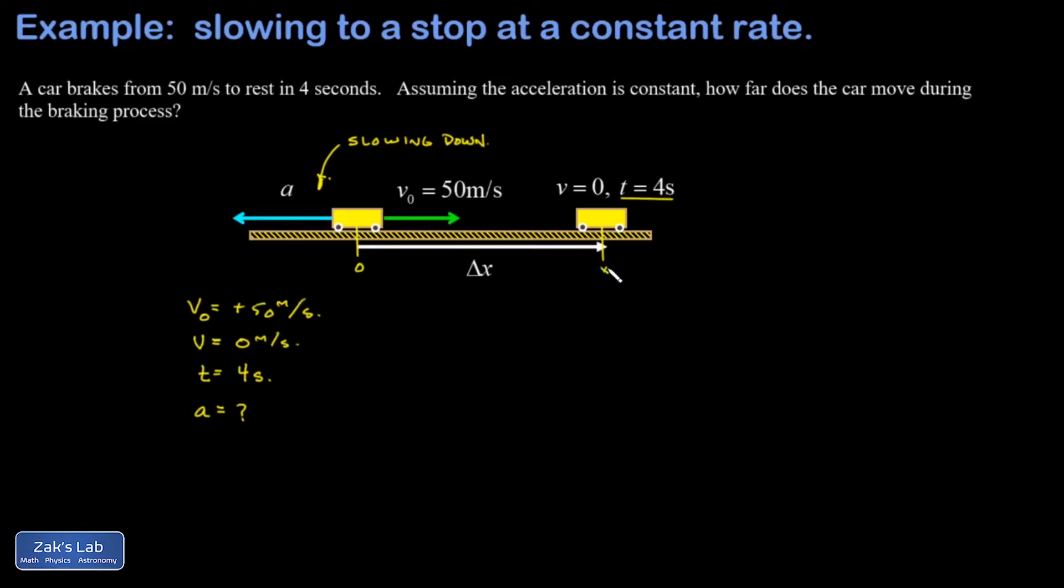Now this is one case where the fourth kinematics equation in the traditional list of equations is going to be the quickest way to get the problem done, so I'll show it that way. I'm also going to show how I used to do it when I was a student, just because I didn't like to memorize more things than I really had to. So we have this equation that delta x, provided the acceleration is constant, is going to be given by the average velocity—I mean the arithmetic mean of the velocities—times how much time has gone by.